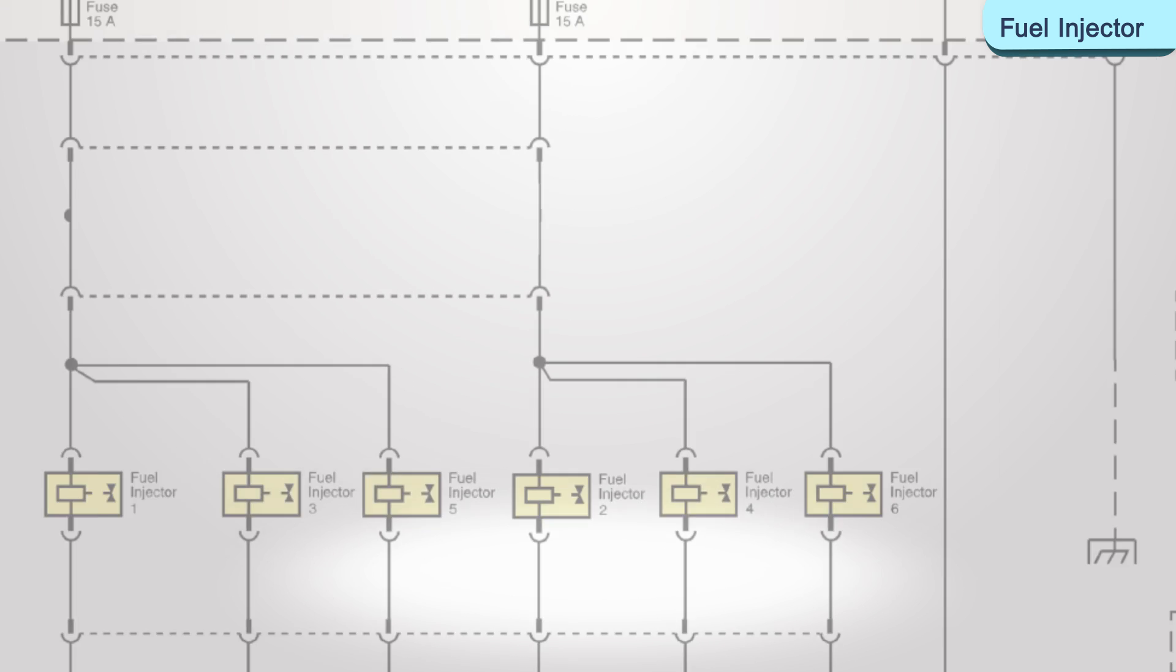Ignition voltage is supplied to one side of the injector from an ignition relay. The ECM operates the injector by controlling the ground path to the injector via a low side driver.